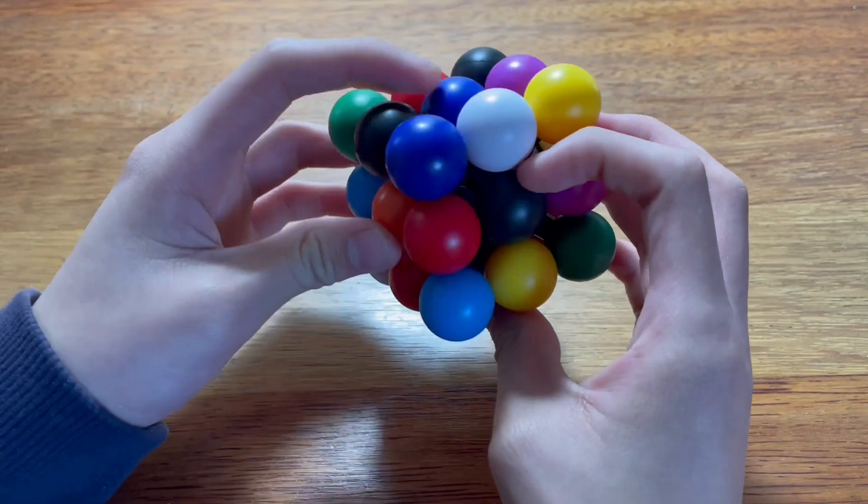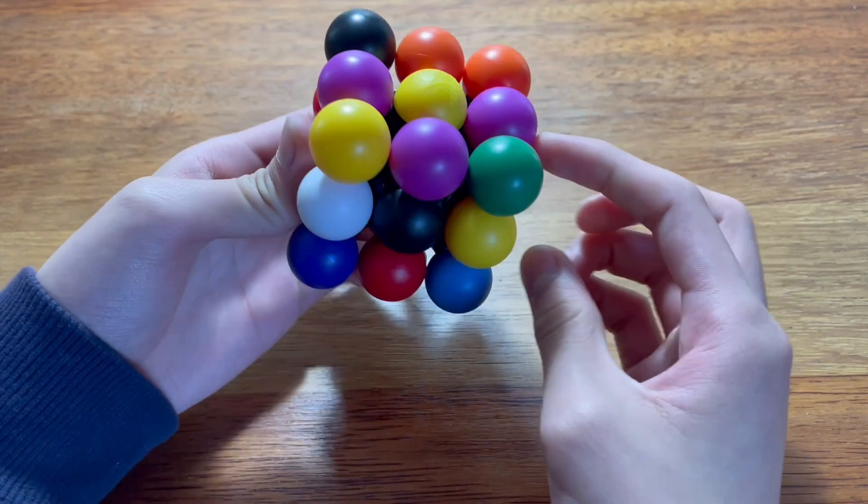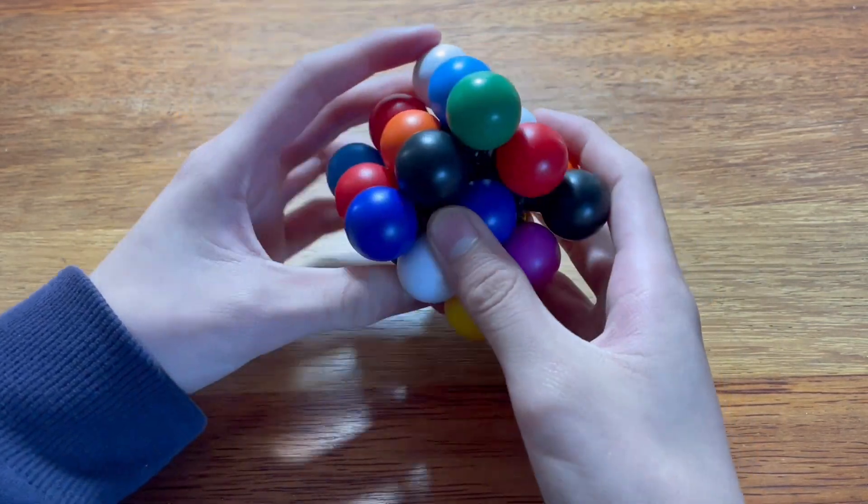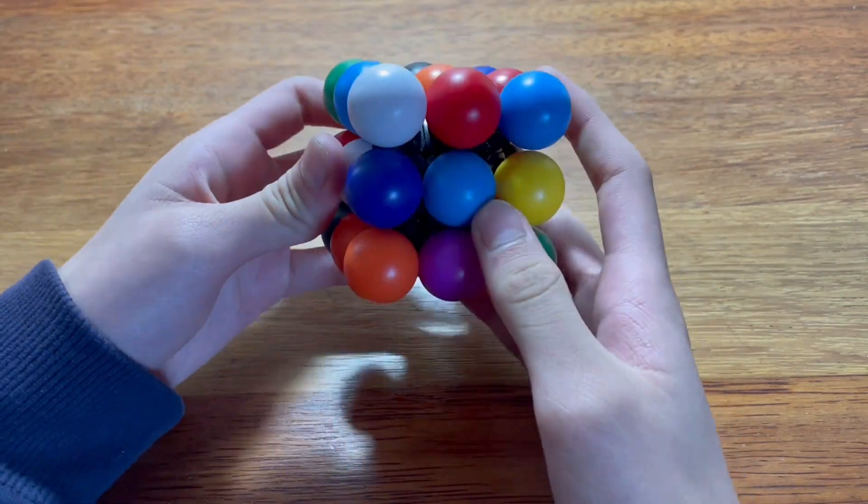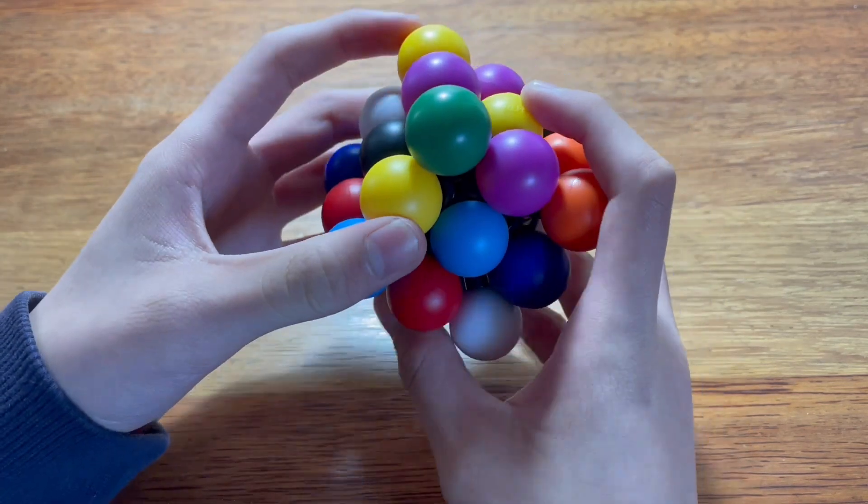But then there's six centers. So that means there's a few colors that don't have any centers. So I think each of the ones with centers has a center, a corner, and edge. So for example, dark blue, white, yeah, light blue, yes, black, yes, orange, yes, and yellow, yes.